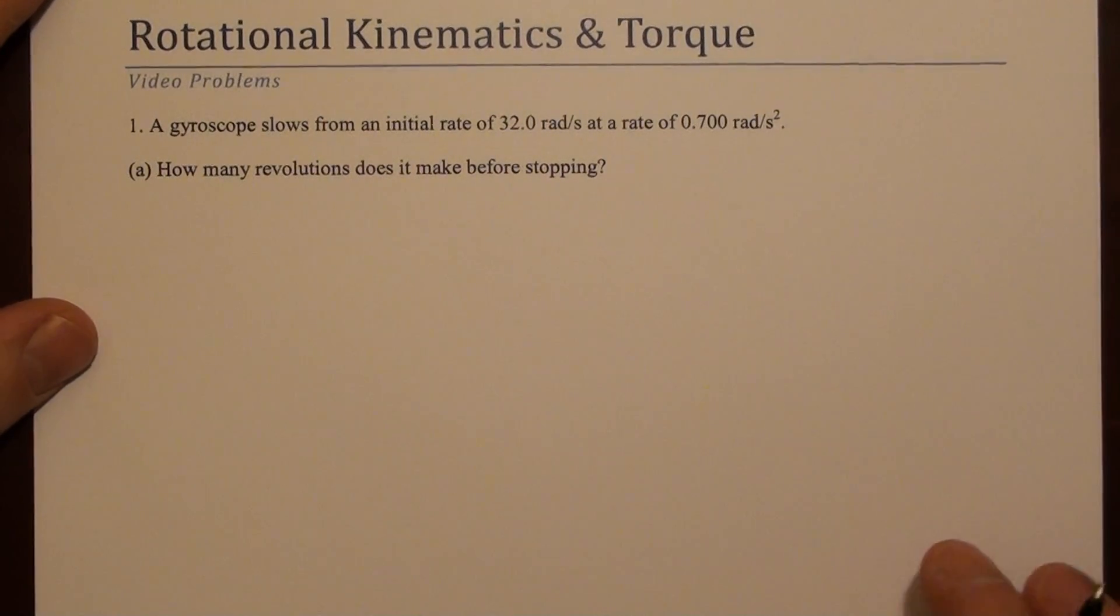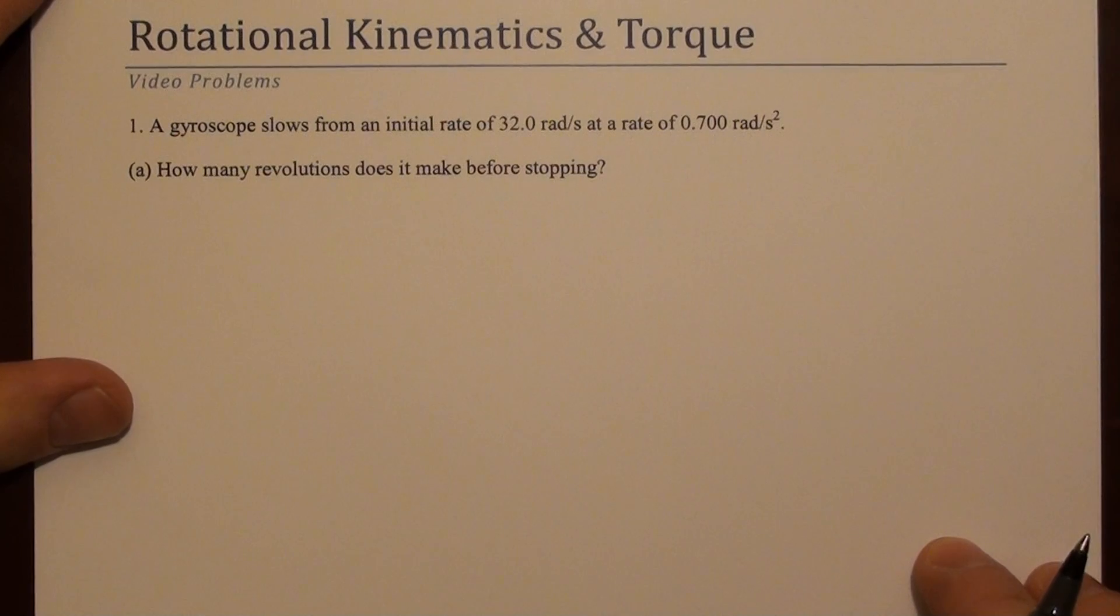So here's a two-part problem that involves rotational kinematics and torque. A gyroscope slows from an initial speed of 32 radians per second at a rate of 0.7 radians per second squared. So the first question is, how many revolutions does it make before stopping?